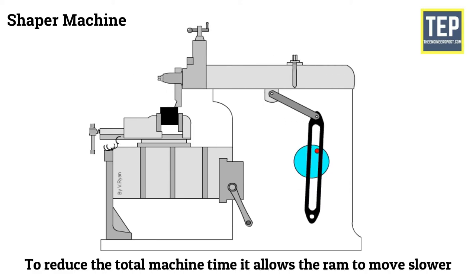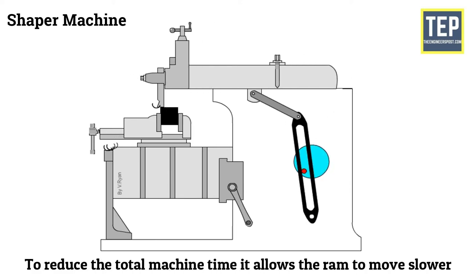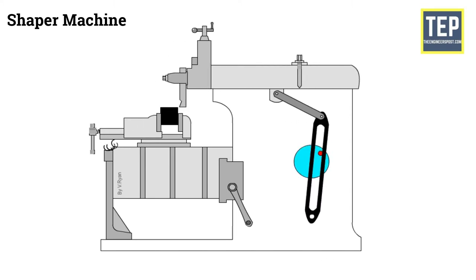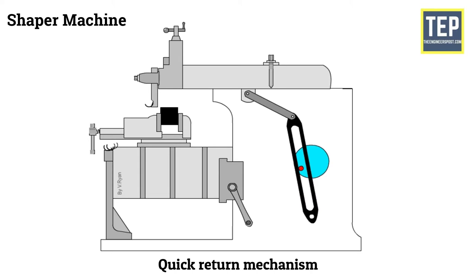Therefore in order to reduce the total machine time, it allows the RAM to move slower during forward stroke and it comes faster in return stroke. This can be achieved by a quick return mechanism.